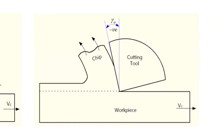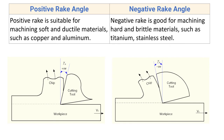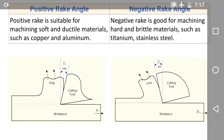With negative rake angle, there is more material at the tool tip compared to positive rake angle, so we can use this cutting tool for cutting hard and brittle materials. Such type of cutting tool with negative rake angle is used for machining hard and brittle materials such as titanium and stainless steel. Thank you so much for watching.